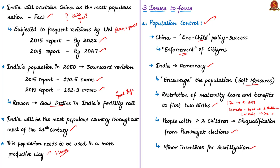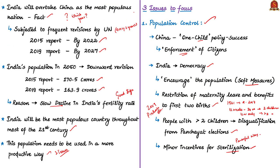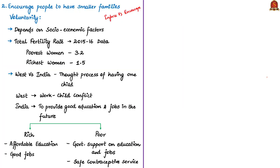We had a question on the Maternity Benefit Act in 2019 prelims. The author tells that giving monetary and other benefits for undergoing sterilization is a powerful way to control population growth, but even such soft measures cannot be enforced — they should be encouraged. There is a sharp difference between enforcing and encouraging. For example, states like Madhya Pradesh have a rule disqualifying people with more than two children from panchayat elections — this is enforcement. Not everyone will follow such rules. Instead, what works is encouraging people to have smaller families voluntarily.